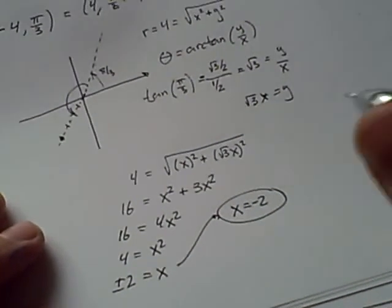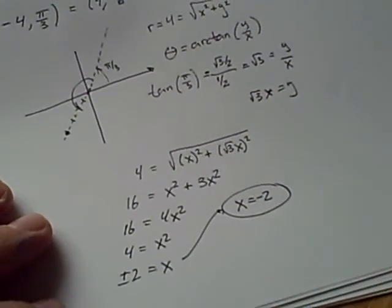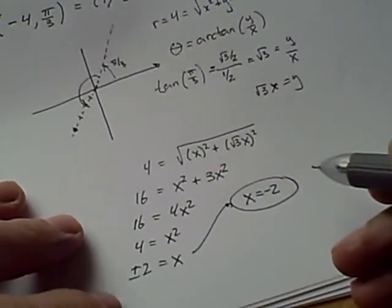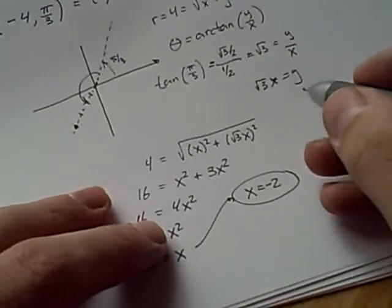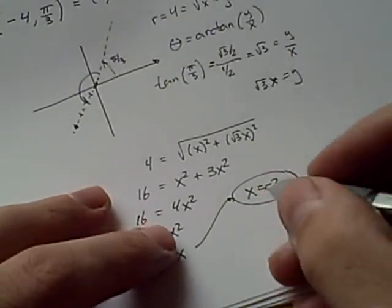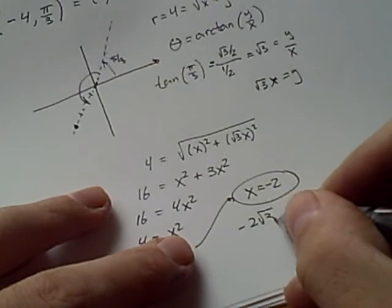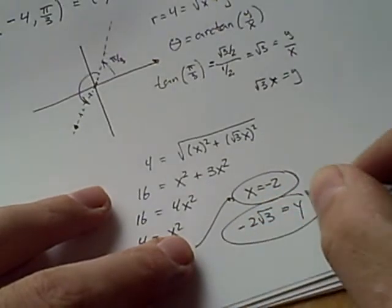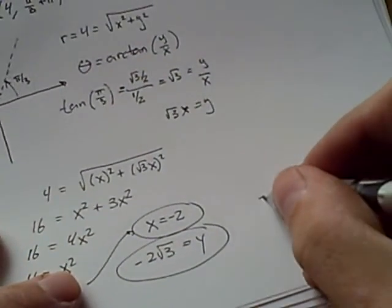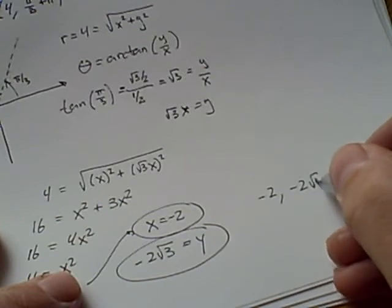So there's minus 2. So we know from the picture. Okay, that being said, now we can find out what y is, because it's just minus 2 times root 3. So minus 2 times root 3 equals y. And there are our points. Minus 2, minus 2 root 3.